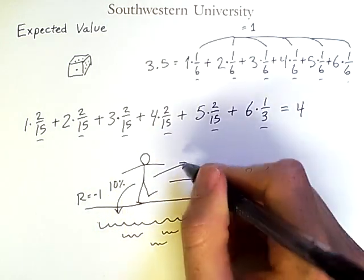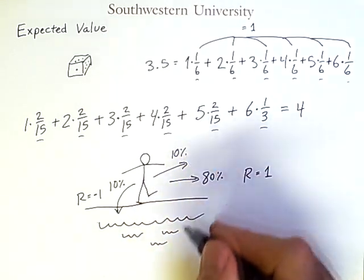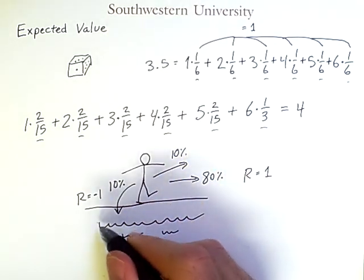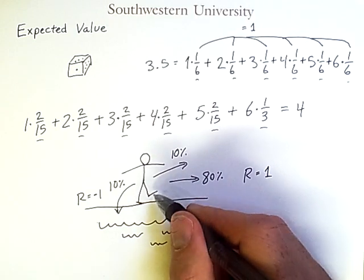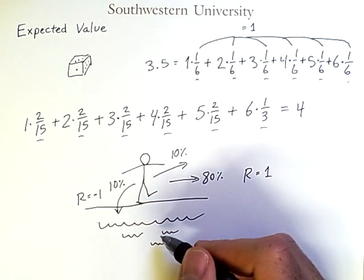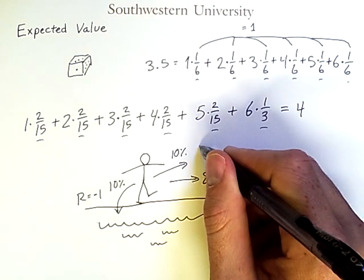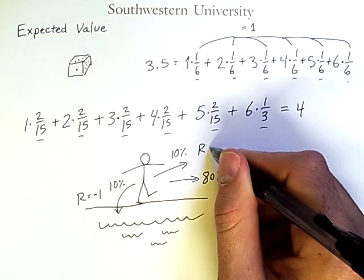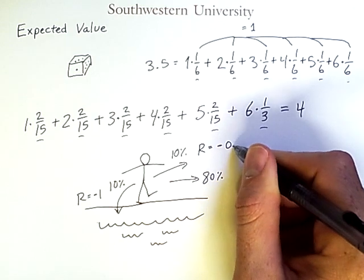Now, I could also fall that way, but that would just be falling back onto the concrete at the ledge. So I would stumble for a second, but I wouldn't actually fall in and get wet here. So the reward there is not as bad. It's only negative 0.1.